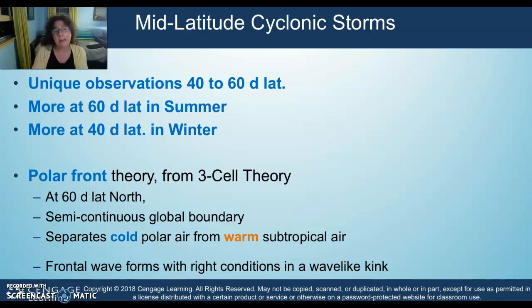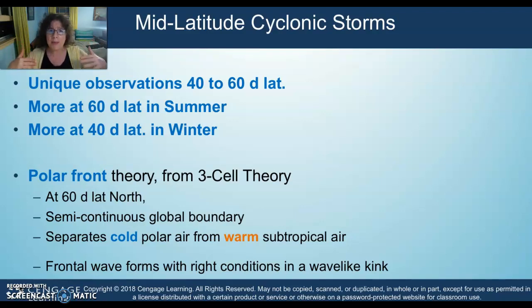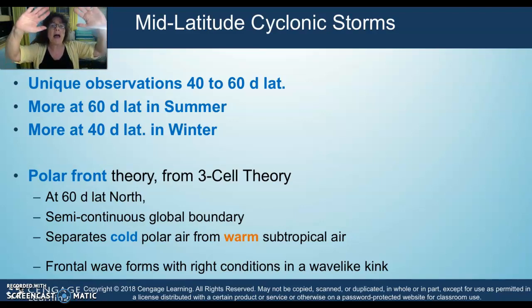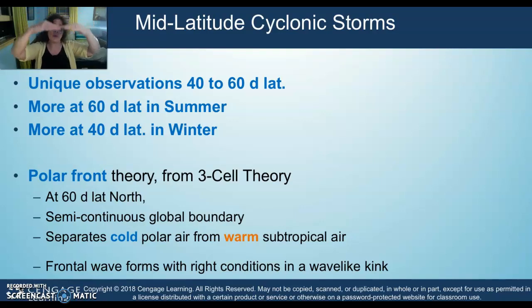This theory came out of unique observations from 40 to 65 degrees latitude. They weren't even studying tornadoes or hurricanes yet — that hadn't even come into view. Modern meteorology really started by studying mid-latitude cyclonic storms. When you think about these storms, you might think of winter only, but in summertime they can form closer to the 60s, since warm equatorial air pushes polar air back. During winter, cold air can come down into the 40s, which is where we see them more often.